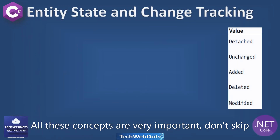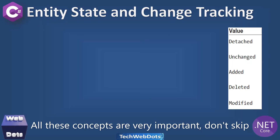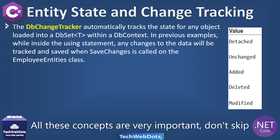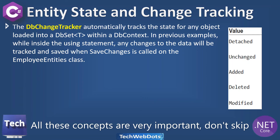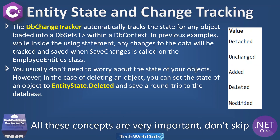When working in a real-time application, you may wonder how to track changes to entity state — since entities now represent our tables and data. The DbChangeTracker automatically tracks the state of any object loaded into a DbSet within a DbContext. Inside a using statement, any changes to data will be tracked and saved when SaveChanges is called on the entity class.